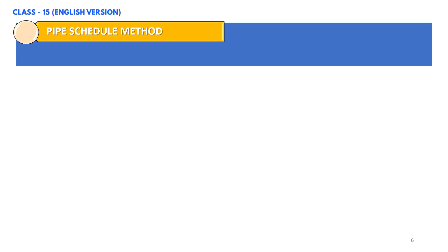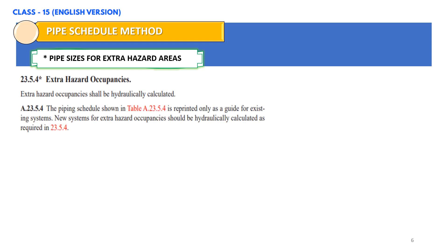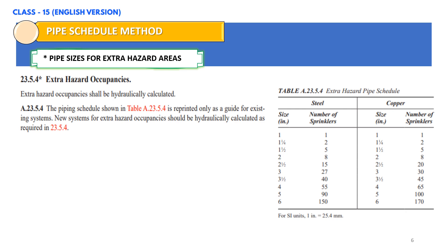For extra hazard occupancies, the pipe schedule method cannot be used. However, there are some exceptions as shown on your screen. The piping schedule shown in table 23.5.4 is reprinted only as a guide for existing systems. New systems for extra hazard occupancies should be hydraulically calculated as per NFPA 13 and cannot use the pipe schedule method.